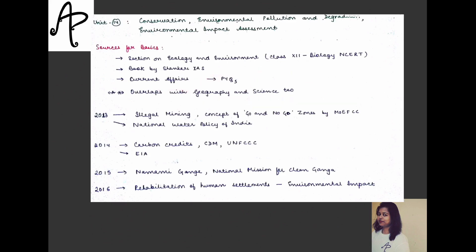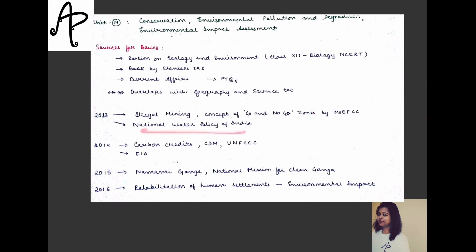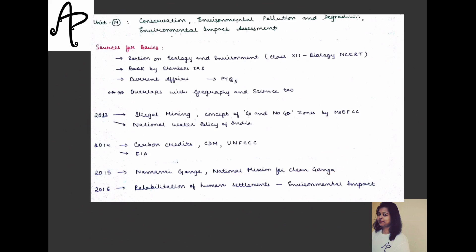The environment section overlaps with the geography and science sections. For example, in 2013 questions were on illegal mining and the concept of 'go and no-go zones' — current affairs from MoEFCC (Ministry of Environment, Forest and Climate Change). In 2014, questions covered carbon credits, CDM, and UNFCCC. In 2015, there was the Ganga-related Namami Gange project (National Mission for Clean Ganga). In 2016, questions covered rehabilitation of human settlements and environmental impacts, with EIA being asked separately.